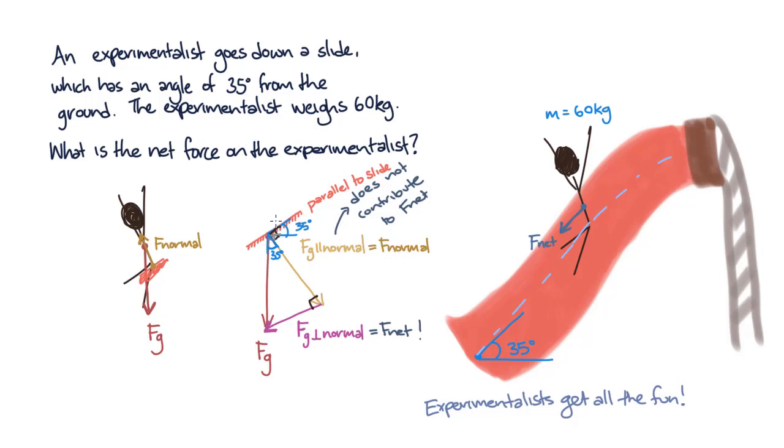Now, if we want to find the side of the triangle that is perpendicular to the normal force, we need to use trigonometry. So if you remember SOHCAHTOA, we label each of the three sides of the triangle, and we find that we want the side of the triangle that is opposite to the angle. The side of the triangle that we already know is the hypotenuse, which is Fg.